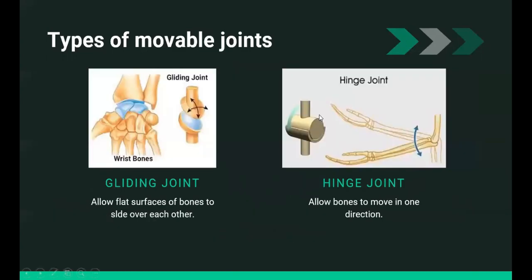The gliding joint allows flat surfaces of bones to slide over each other. These joints give you the ability to walk on uneven surfaces and move your hand to the left and right.